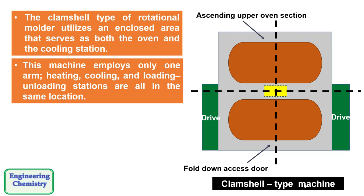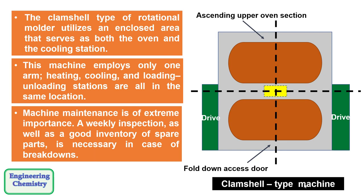Robotic systems for loading unloading of powder and parts are now making their way into this industry. Some resins such as nylons require a nitrogen atmosphere. Machine maintenance is of extreme importance. A weekly inspection as well as a good inventory of spare parts is necessary in case of breakdowns.